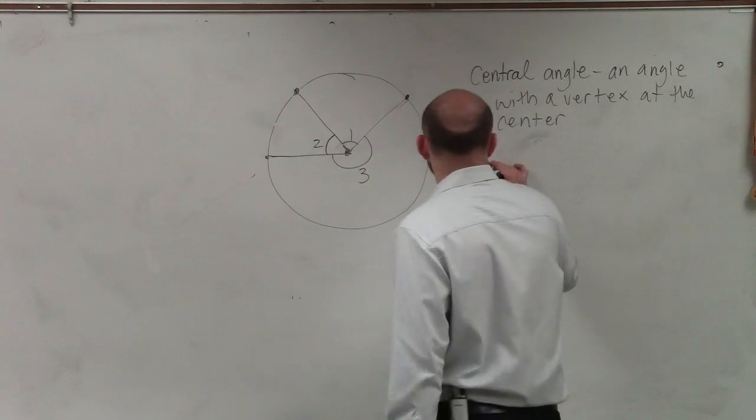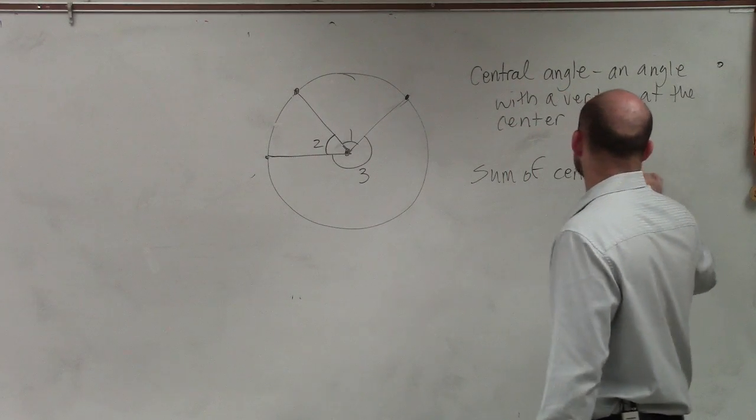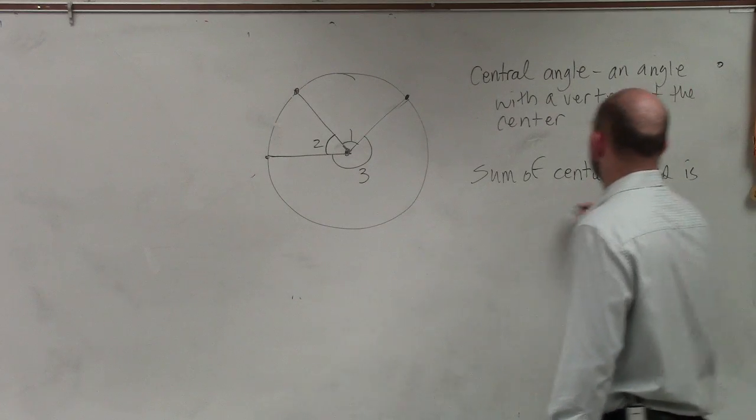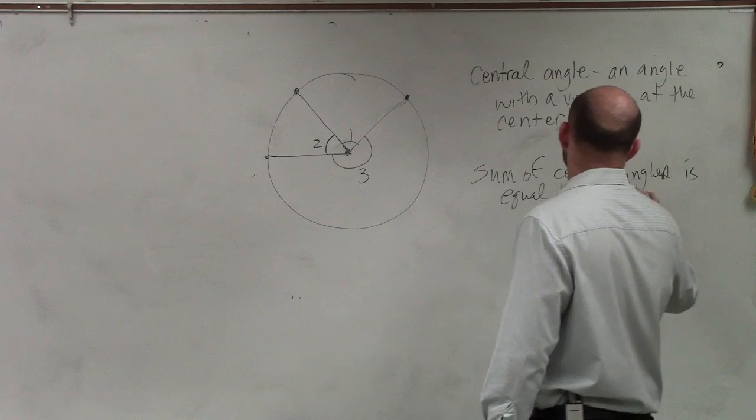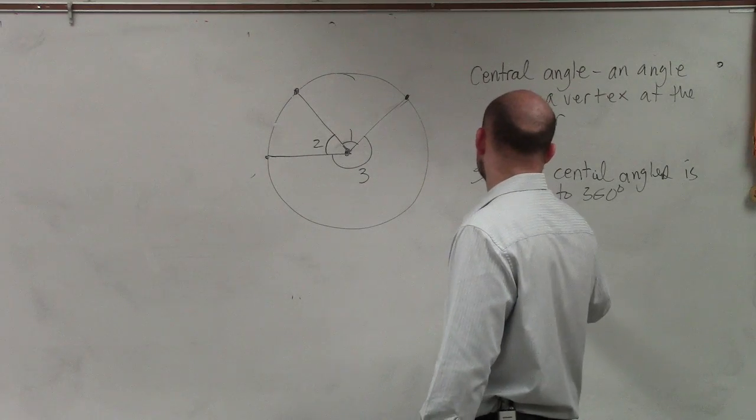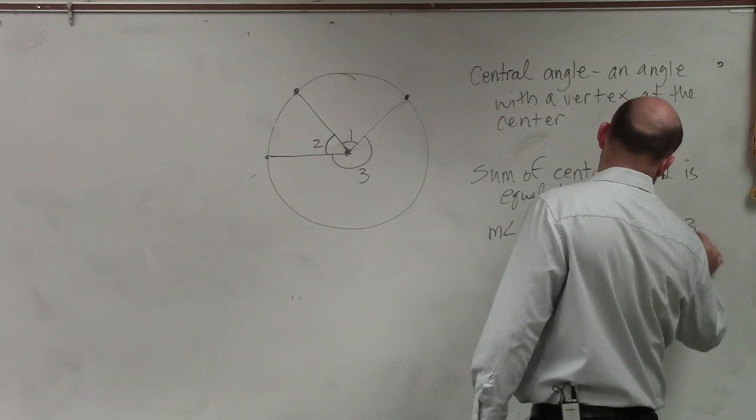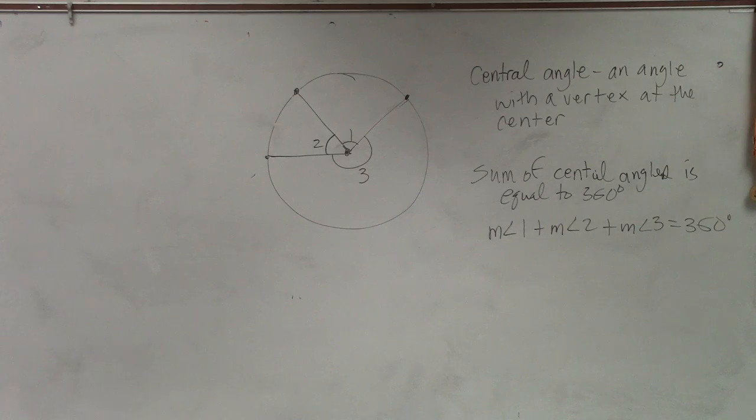So the reason why I tell you that is the sum of central angles is equal to 360 degrees. So I can say the measure of angle 1 plus the measure of angle 2 plus the measure of angle 3 equals 360 degrees. So the sum of all your central angles adds up to 360 degrees.